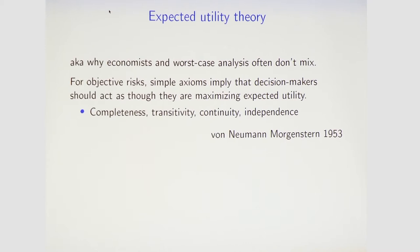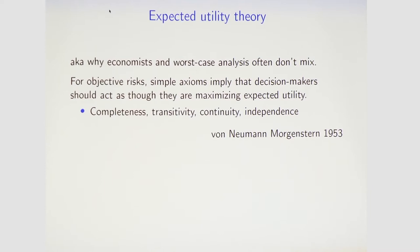The axioms essentially say: first, that if I give you any two lotteries over outcomes, you can rank them. Second, that if you prefer A to B and B to C, you should prefer A to C. Third, continuity — if you give me a great lottery and a bad lottery, I can find some mixture over the great and bad lottery that makes you indifferent with any medium lottery. And fourth, independence — if you prefer lottery A to B and I mix in some probability P of a third lottery C into both, your preferences don't change. These seem normatively very appealing, and it turns out they are equivalent to maximizing expected utility.